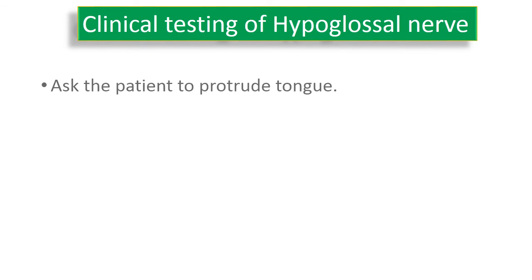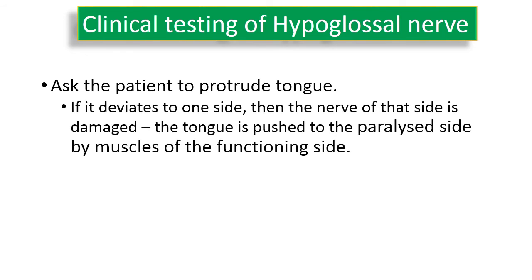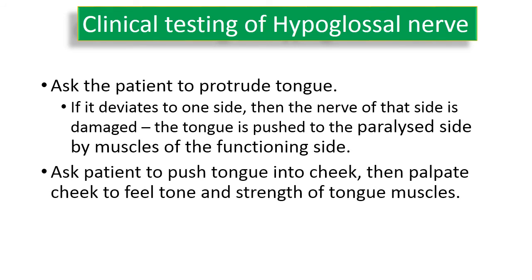The hypoglossal nerve can be clinically tested by asking a patient to protrude the tongue and noting whether it is deviated to any side. If it is deviated to one side, the nerve on that side is damaged — the tongue is pushed to the paralyzed side by the muscles of the functioning side. It can also be tested by asking the patient to push the tongue into the cheek, then palpating the cheek to feel the tone and strength of the tongue muscles.